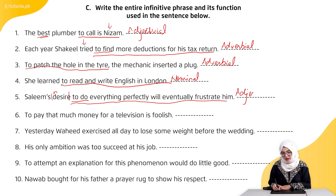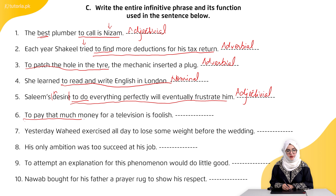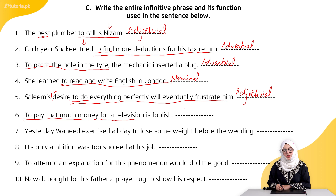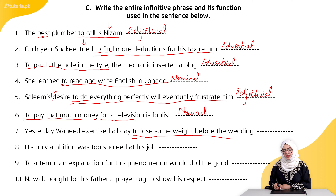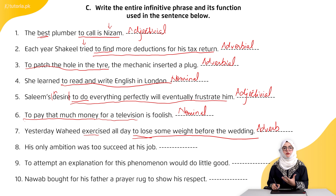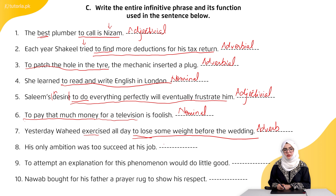Sixth: 'To pay that much money for a television is foolish.' 'To pay that much money for a television' — yeh infinitive phrase hai. What is foolish? To pay that much money — so this is nominal, acting as a noun (subject). Seventh: 'Yesterday, Wahid exercised all day to lose some weight before the wedding.' 'To lose some weight' — yeh infinitive phrase hai. Exercise all day — kisliye? To lose some weight — additional information di ja rahi hai, so it is acting as an adverb.